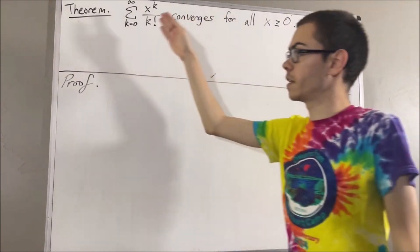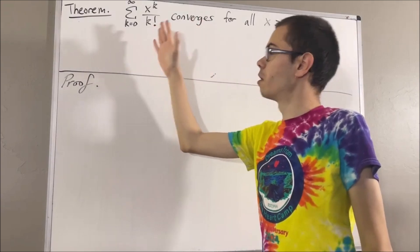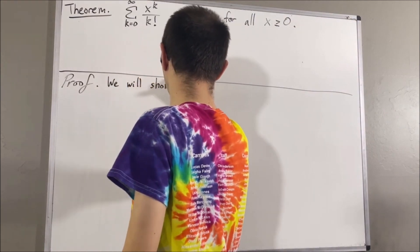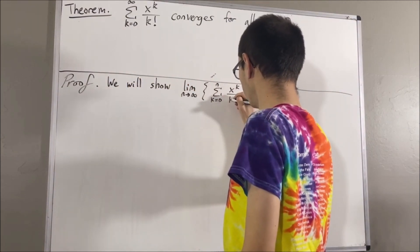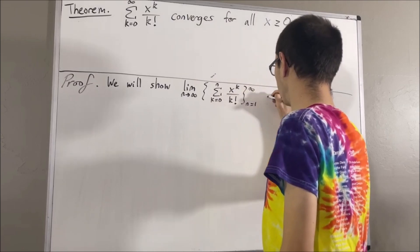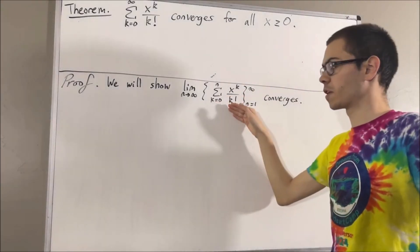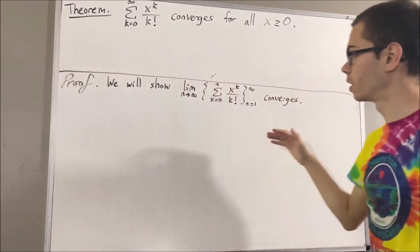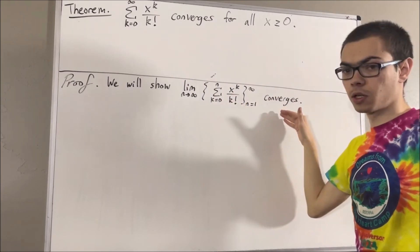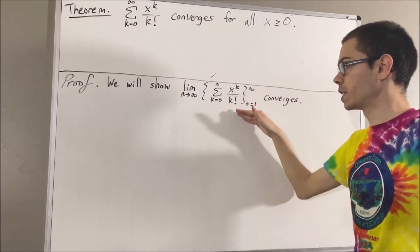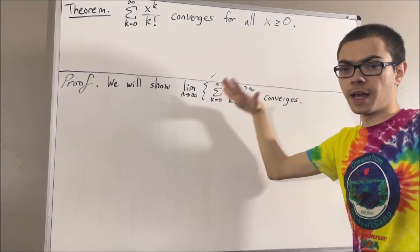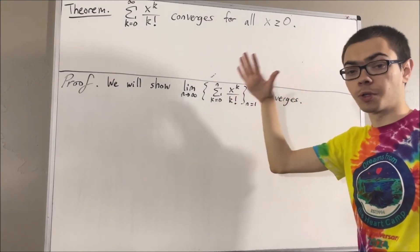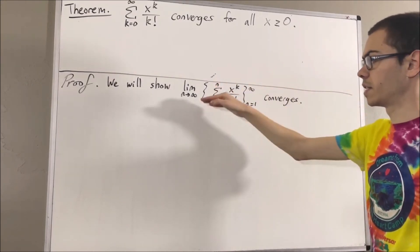We could prove that this infinite series converges using the ratio test, but we're going to take a different approach. We're going to show that this sequence of partial sums converges, because that's what it means for this infinite series to converge. To show that this sequence converges, we're going to show that this sequence is increasing and bounded above, because by the monotone convergence theorem, that tells us that this sequence converges.